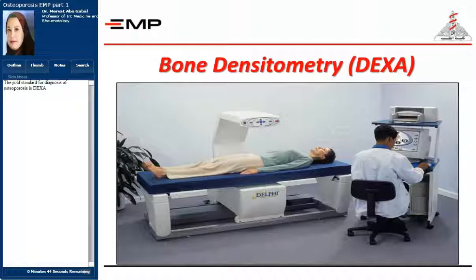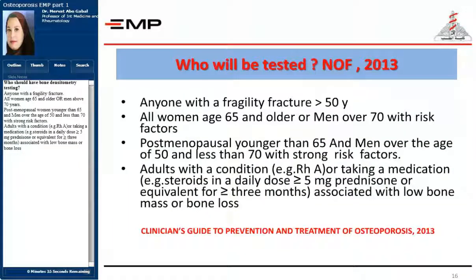The gold standard for diagnosis of osteoporosis is DEXA — dual-energy X-ray absorptiometry. Who should be tested by DEXA? According to the National Osteoporosis Foundation 2013, this includes anyone with a fragility fracture, all women aged 65 years or older, men above 70 years, postmenopausal women younger than 65 with risk factors, men between 50 to 70 years with strong risk factors, and all adults with conditions like rheumatoid arthritis or taking medications like steroids associated with low bone mass or bone loss.